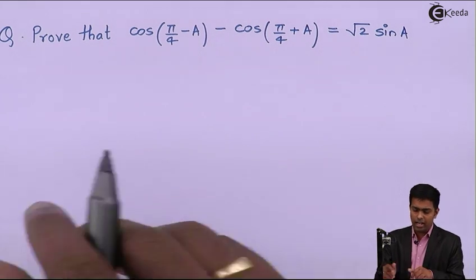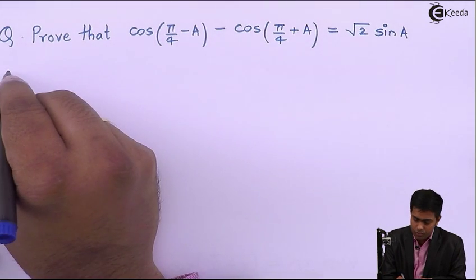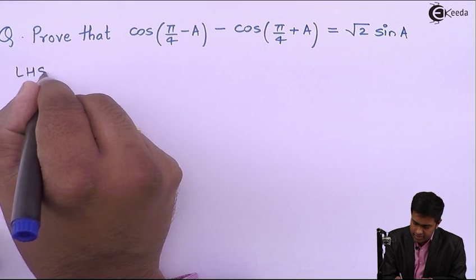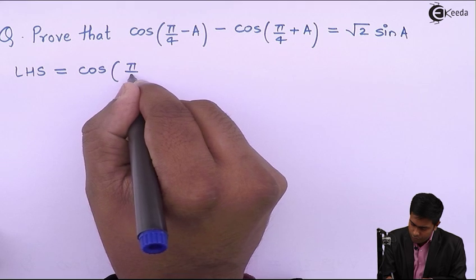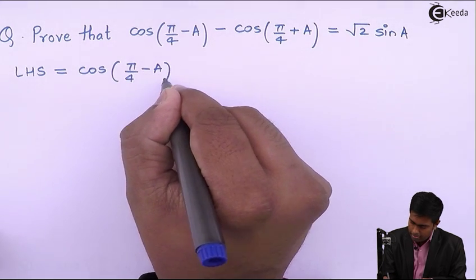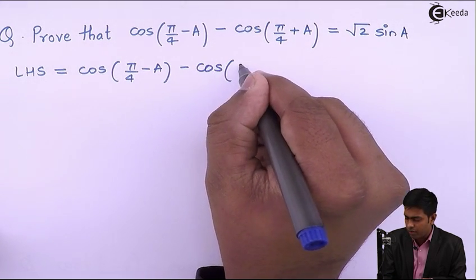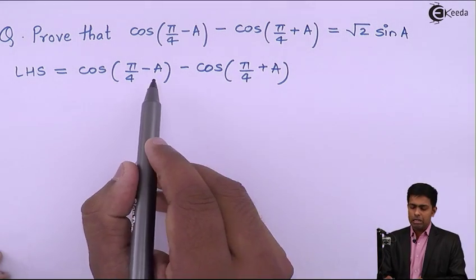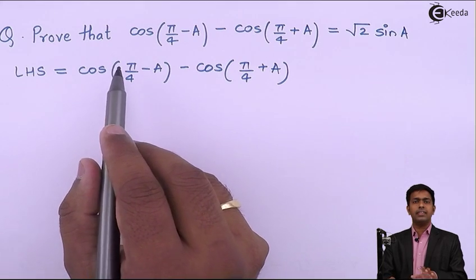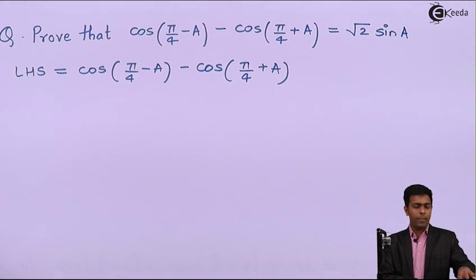Now LHS is given as cos(π/4 - A) - cos(π/4 + A). Here in the first term we can see that it is in the format of cos(A - B).